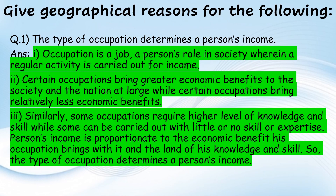In this lesson the geographical reasons section covers: 'Give reasons — the type of occupation determines a person's income.' Occupation is a job, a person's role in society, where a regular activity is carried out for income. Certain occupations bring greater economic benefits to society and the nation, while others bring relatively less. Some occupations require a higher level of knowledge and skill, while some can be carried out with little or no expertise. A person's income is proportionate to the economic benefit their occupation brings and the level of knowledge and skill involved.